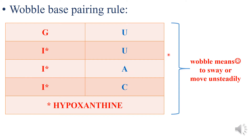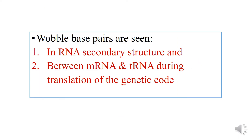Wobble means to sway or to move unsteadily, which means that guanine is not binding to its traditional base cytosine, but it is also binding to uracil. Inosine, which does not occur in DNA at all, is an unusual base seen binding with uracil, adenine, as well as cytosine. There is a lot of flexibility in this pairing compared to Watson and Crick base pair rules. Wobble base pairs are generally seen in RNA secondary structure and between mRNA and tRNA during translation of genetic code.